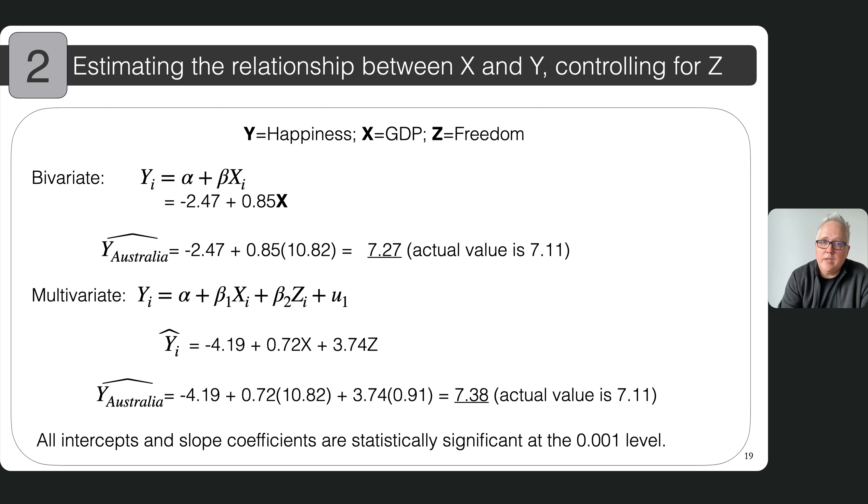So here I've added to GDP the freedom measure. And as I did last week, you have an estimated relationship with just one independent variable of GDP with a negative slope, a negative 2.47 is the intercept, the expected value of y if you didn't have any GDP in your country, x equals zero. And for GDP, the estimated slope coefficient or the beta is 0.85. And what I think is really interesting and useful is to actually plug in those values to get that expected amount of happiness in Australia given GDP. That gives us 10.82 for the GDP measure for Australia in this year. The beta and the alpha stay the same, and that gives us an expected happiness of 7.27, which is a bit higher than the actual measured happiness in Australia in that year of 7.11.